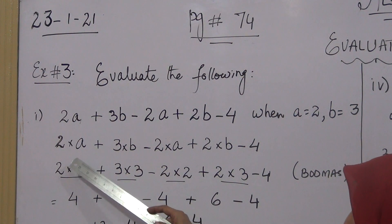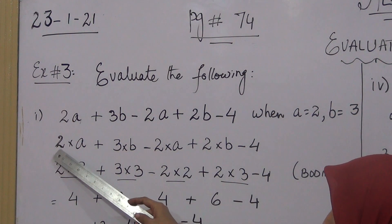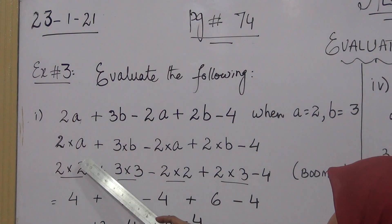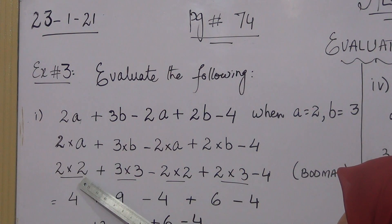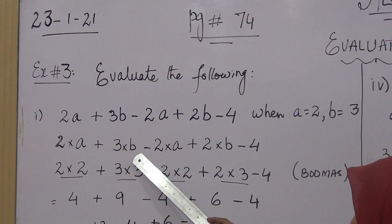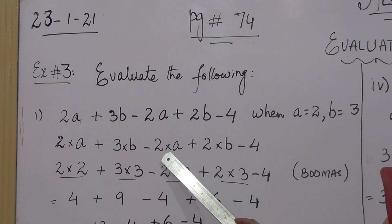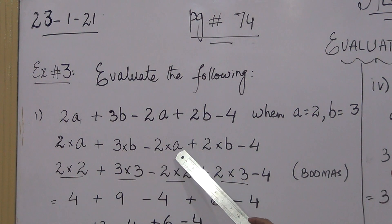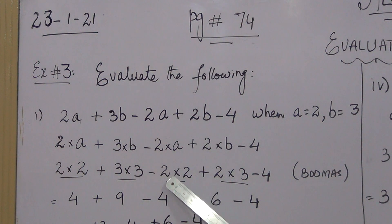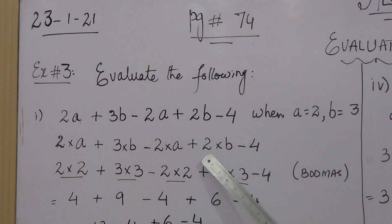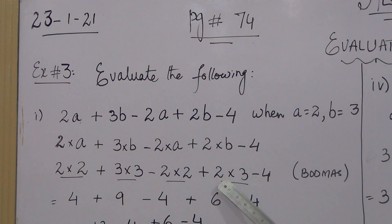a and b values are given: a is equal to 2, b is equal to 3. The value of a is 2, which we have to substitute. So in this expression: 2 multiplied by 2, plus 3 multiplied by b — 3 multiplied by b — minus 2 multiplied by a, the value of a is 2: 2 multiplied by 2.